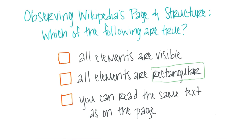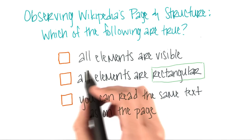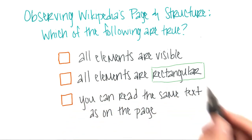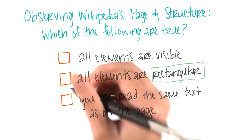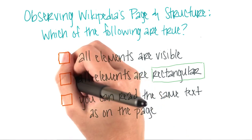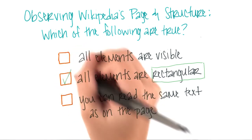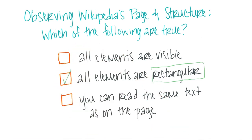Let's make sure we made the same observations. Now, not all observable elements are actually visible on the page, so this first answer actually isn't correct. However, all highlighted elements are rectangular.